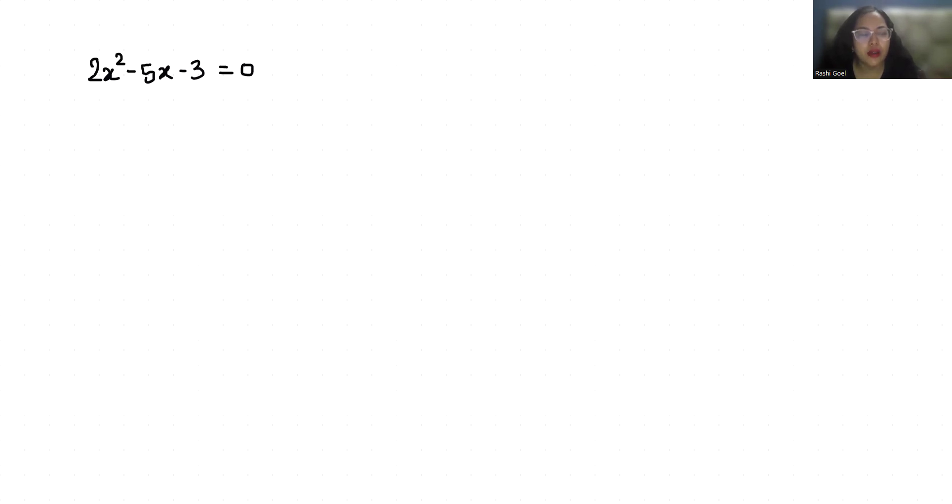We have to find the discriminant and roots. So let's start with today's video solution. This is a quadratic equation. We are going to compare with standard form, that is ax² + bx + c = 0.